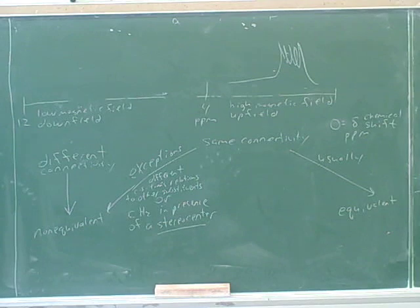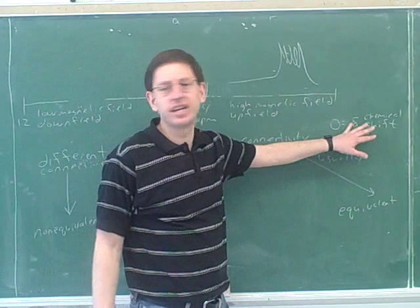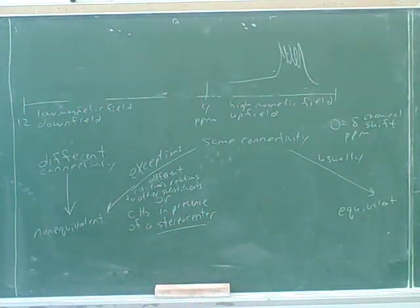But if some of the hydrogens are in different but very similar environments, they might have peaks at different but very similar deltas, and they might be so close you might not be able to distinguish them on the printout. So that's something you have to watch out for. That's not that unusual, actually.